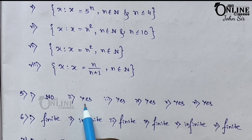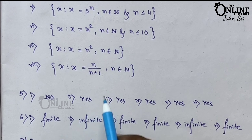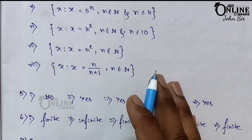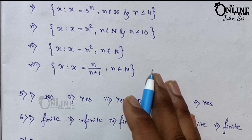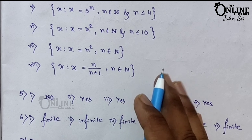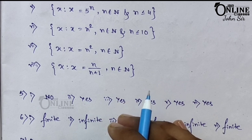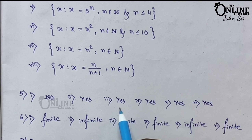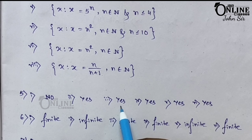Number 3: set of all Indian kids 5 meters tall. A kid being 5 meters tall is impossible. So this is a null set — answer is yes.